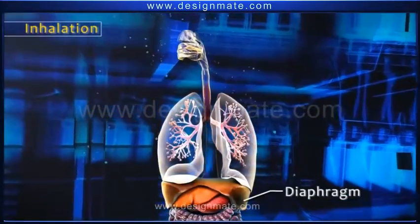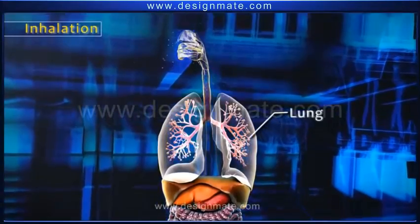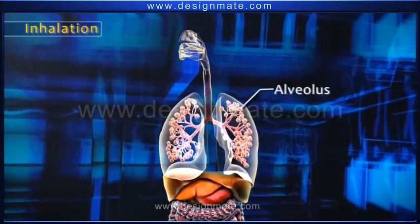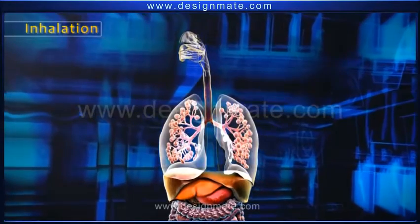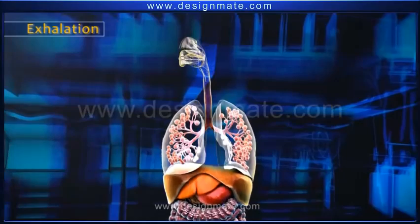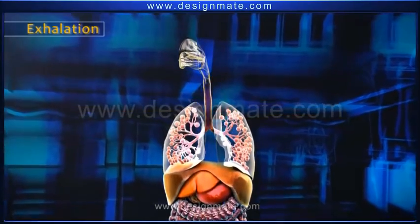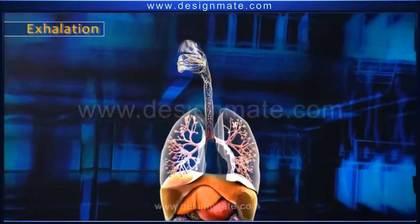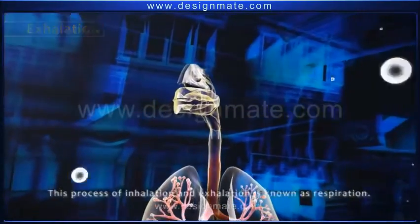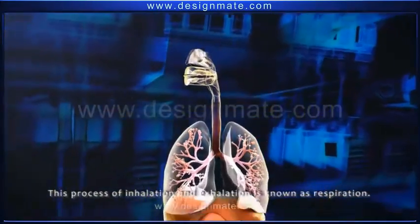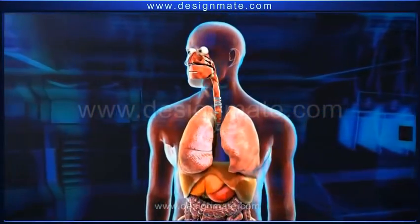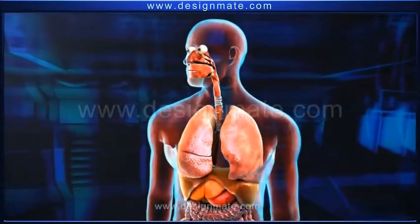The process of breathing in air rich in oxygen is called inhalation. After the contraction of the muscular diaphragm, the lungs expand and the air rushes in, resulting in the inflation of the alveoli. During exhalation, the diaphragm moves up and the lungs contract, causing the alveoli to deflate and forcing the air out. This exhaled air is rich in carbon dioxide. This process of inhalation and exhalation is known as respiration, which occurs approximately 20 times per minute.